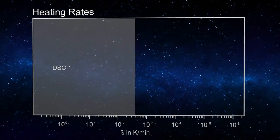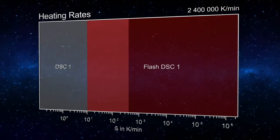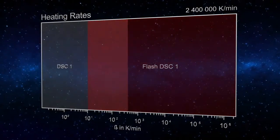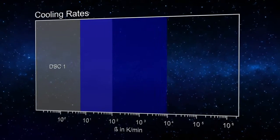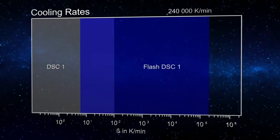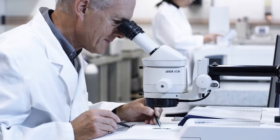In contrast, the new Flash DSC-1 provides heating rates of up to 2,400,000 Kelvin per minute and cooling rates of up to 240,000 Kelvin per minute. These incredibly high heating and cooling rates present exciting new application possibilities that were previously undreamt of.